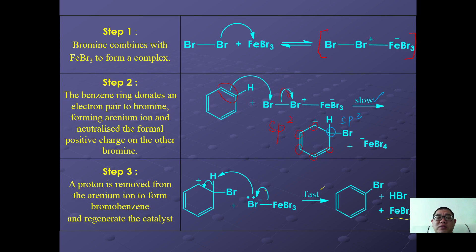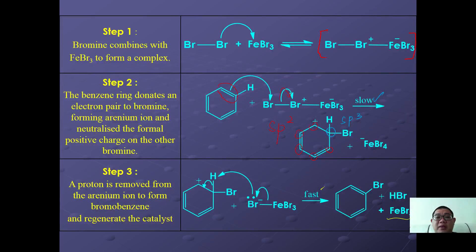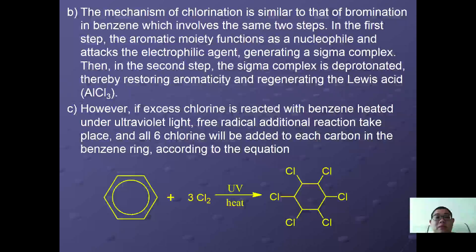Take a good look at how the arrows are drawn here — heterolytic fission takes place in these complexes to give out HBr and bromobenzene. The mechanism of chlorination is similar to that of bromination in benzene.